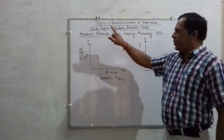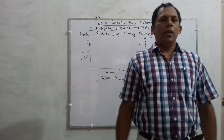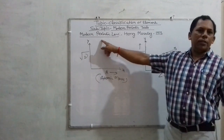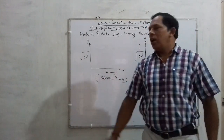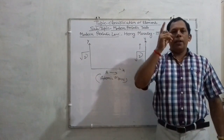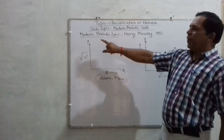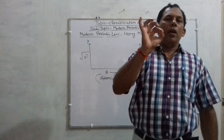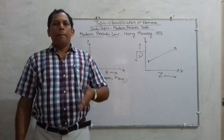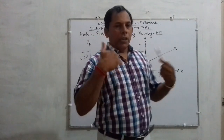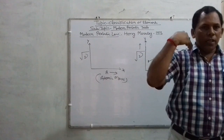The statement of this Modern Periodic Law is based on the principle of atomic number, not atomic mass. This law can be stated as: the physical and chemical properties of the elements are a periodic function of their atomic number. According to this law, elements are arranged in the increasing order of their atomic number.